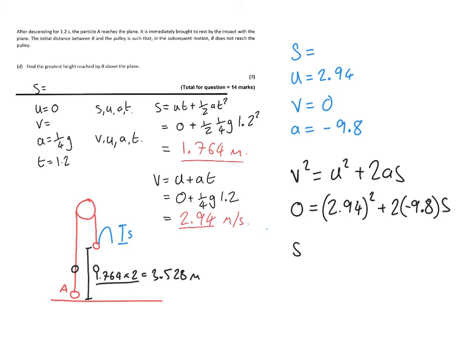What we need to do now is find the distance it takes for B to reach a speed of 0, which is what you're seeing on the right-hand side of the screen right now.